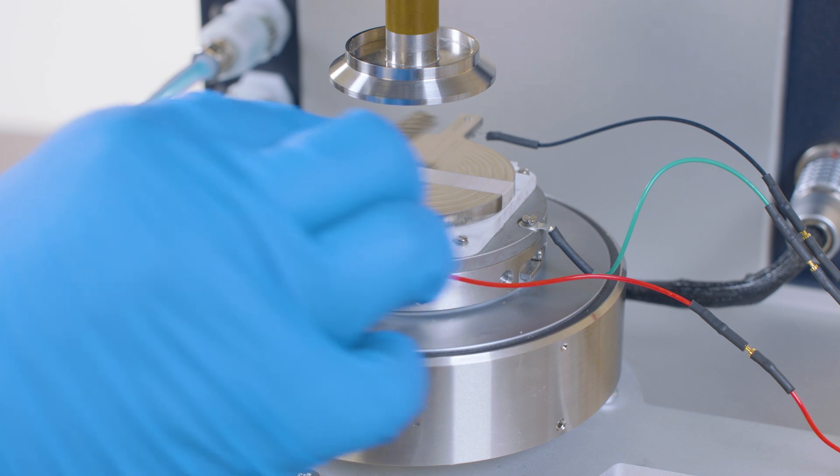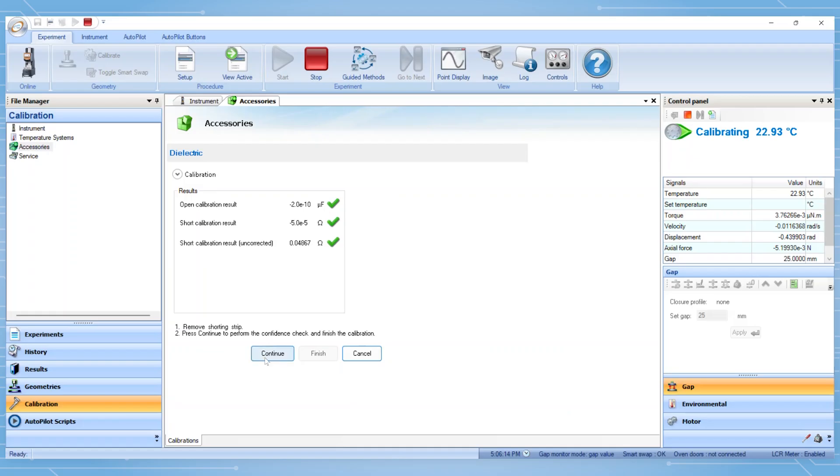When prompted, remove the shorting strip and press Continue to proceed to the confidence check. Green check marks indicate that the calibrations and confidence check have passed.